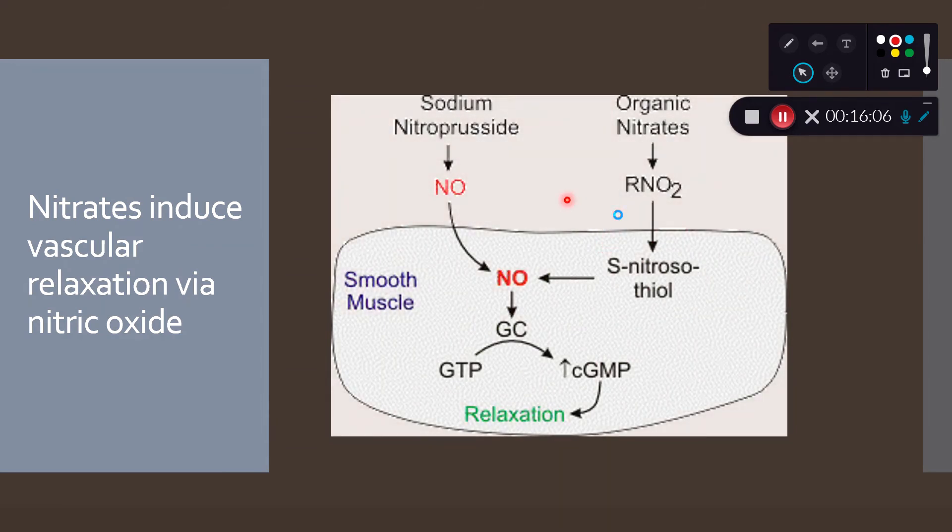When you add nitric oxide, the nitric oxide activates guanylyl cyclase, and that converts GTP into cyclic GMP, and cyclic GMP interacts with the proteins that control actin and myosin interaction, and the result is that you get relaxation of the muscle.